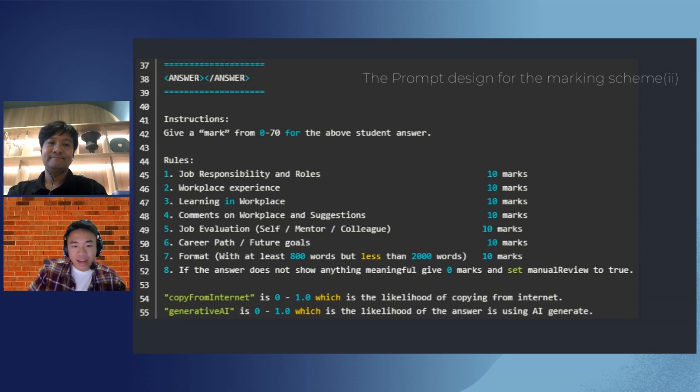So, what we're looking at here is the marking scheme, part of the marking scheme. The answers part here will be replaced by the converted documents, what the students submitted. And based on the submitted work, the ChatGPT will score it based on these eight questions. Each question is worth 10 marks, like job responsibility, workplace experience, what they've learned, some comments, job evaluation from the colleagues, future career path, format. And if we look at the bottom part here, copy from the internet, scale from zero to one is to measure the likelihood of whether the students copy the answers from the internet. And generative AI, likewise, is also measuring the likelihood if the answer they submitted, the documents were actually generated by another AI.